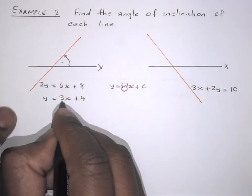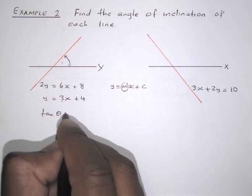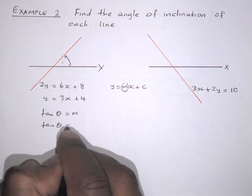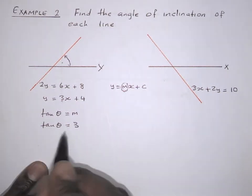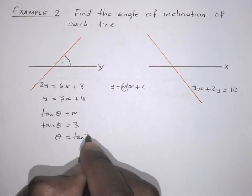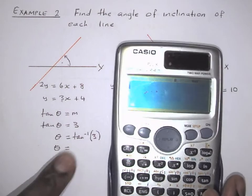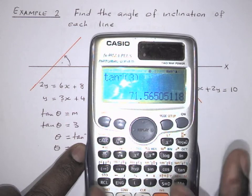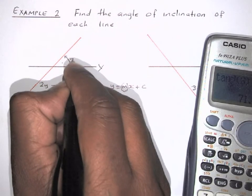Now we're finding the size of the angle. We write tan theta equals m, and since m is 3, tan theta equals 3. To find theta, we use arctan: theta equals arctan(3). Using the calculator — shift, arctan, 3 — the answer is 71.6 degrees. That angle of inclination is 71.6 degrees.